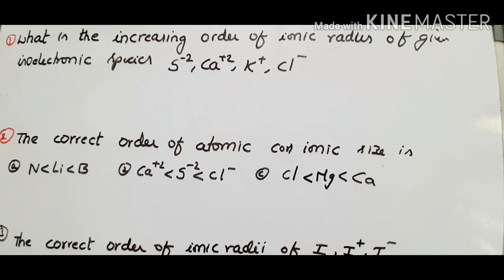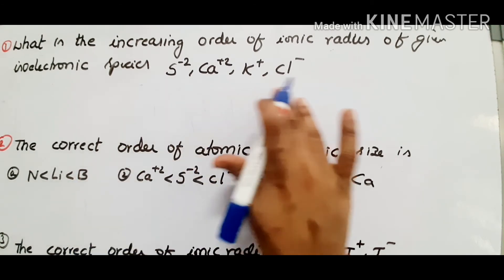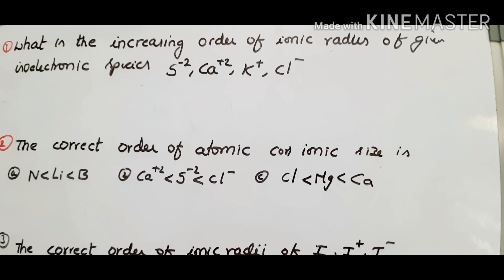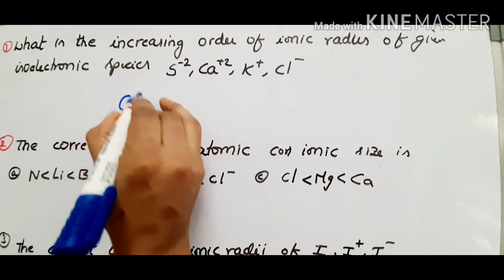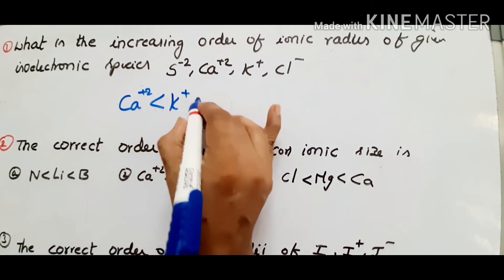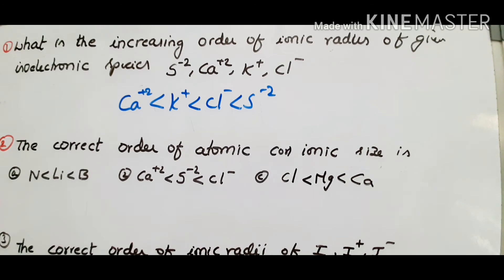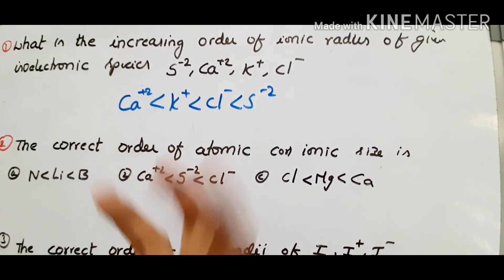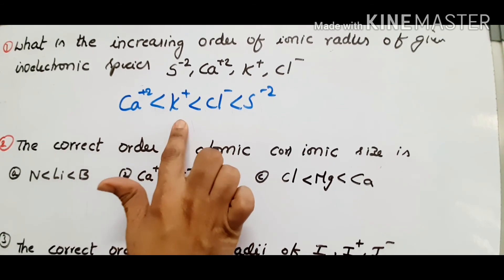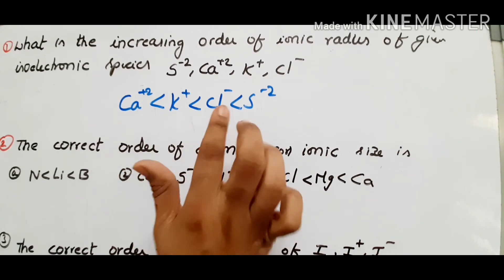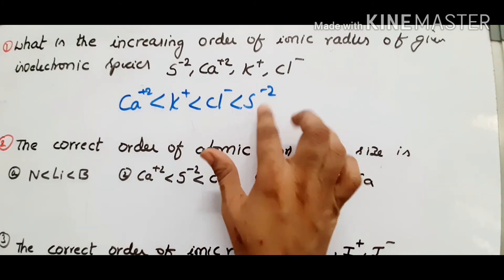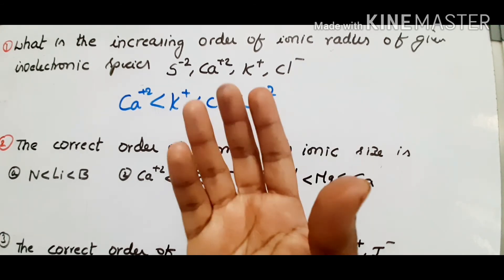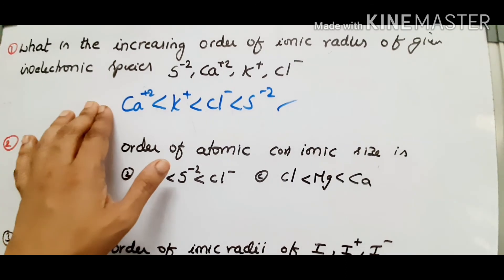What is the increasing order of ionic radius for the isoelectronic species: Ca2+, K+, Cl-, and S2-? All these species have the same number of electrons. The ion with more positive charge has the least ionic radius, because positive charge contracts the size. So: calcium 2+ is less than K+ is less than Cl- is less than S2-. S2- has more size because electrons are added and the electron cloud expands. This is the correct answer.